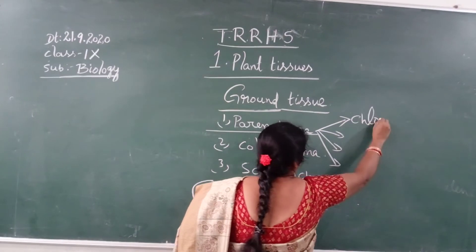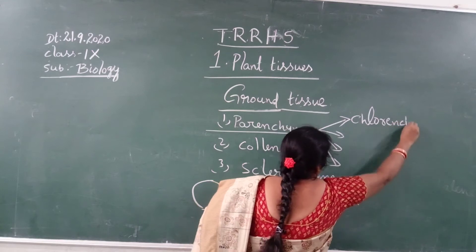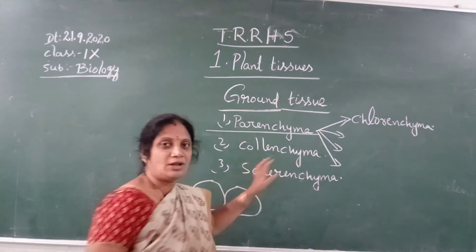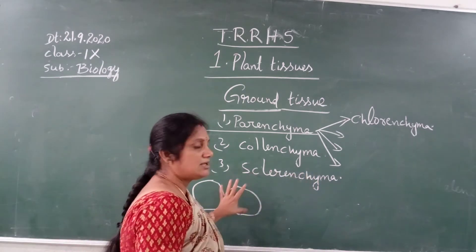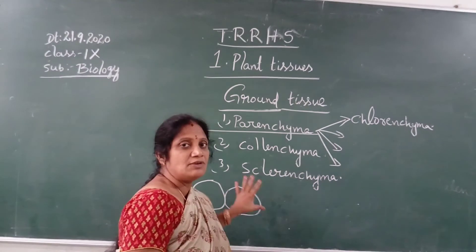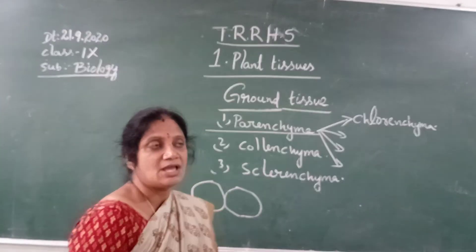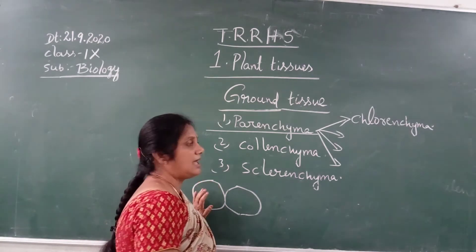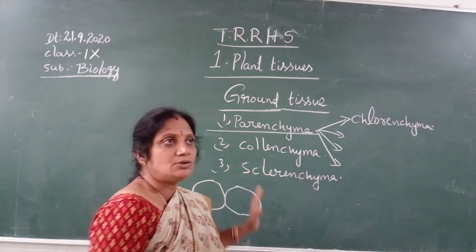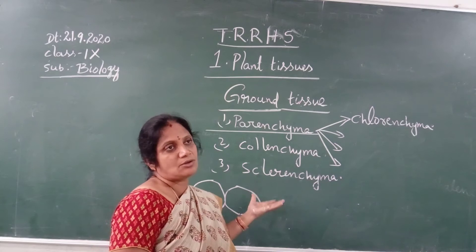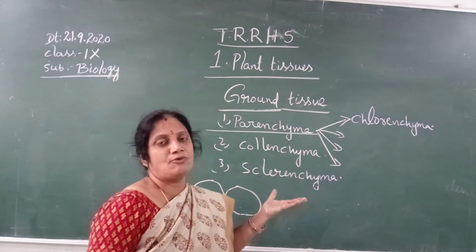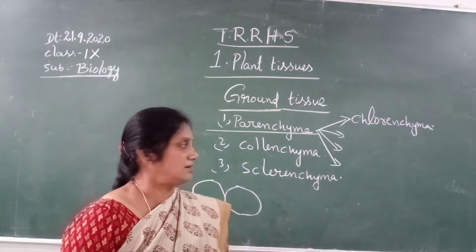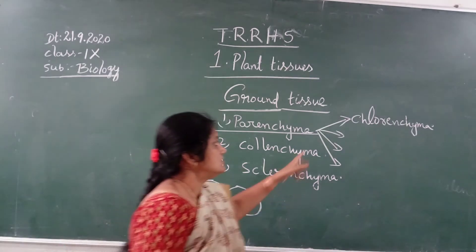The first type is Chlorenchyma. Parenchyma cells which perform photosynthesis and which contain chloroplasts are called as Chlorenchyma. Chloroplasts help for the formation of food, and food adds weight to the plant.